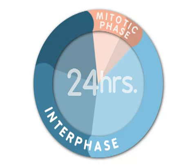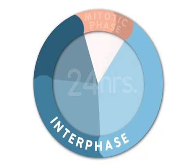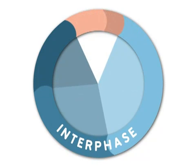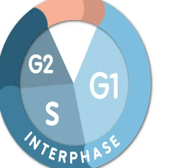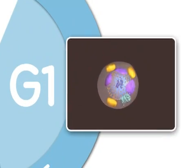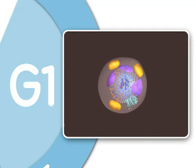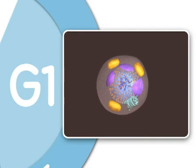Most of the life of a cell is spent in interphase. Interphase consists of three stages called G1, S, and G2. G1, or Gap1, is the first growth stage of interphase.